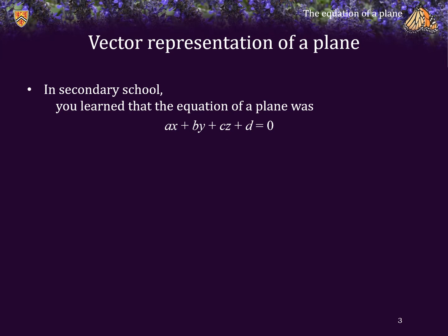Now, in secondary school, you learned that the equation of a plane was of the form AX plus BY plus CZ plus D is equal to 0, where A, B, C, and D are all fixed real values and a point in 3-space X, Y, Z is on the plane if and only if this equation is satisfied.